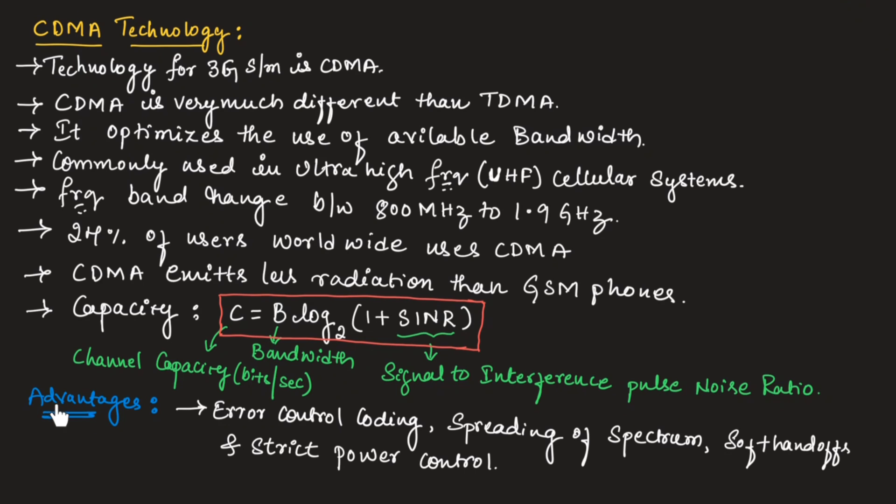Coming to the advantages of CDMA technology: it uses error control coding, which will use some coding technique that will control the error. Spreading of spectrum means it can maximum utilize the available frequency. It has soft handoff and strict power control. These are the different advantages of CDMA technology.